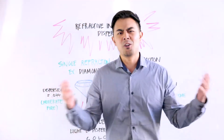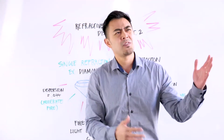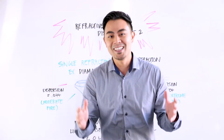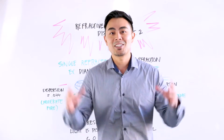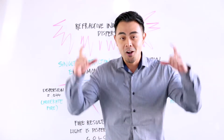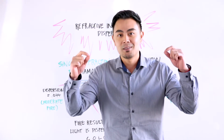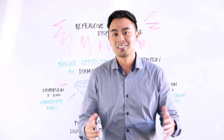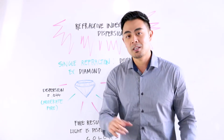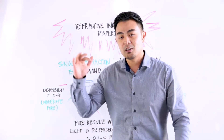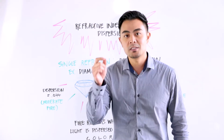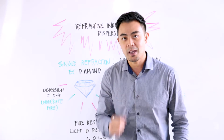Now what does that mean? Why does white light turn into fire and all these colors? White light is a combination of all colors — so when you see the colors of the rainbow, all of that combined makes up white light. The reason is that white light contains different wavelengths, and every single wavelength is a specific color: from reds to blues to greens to yellows.